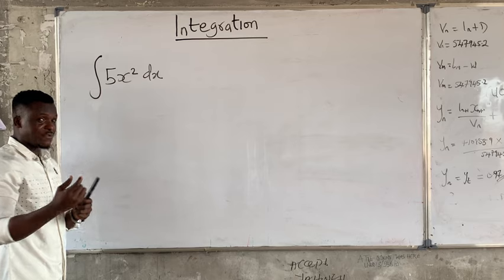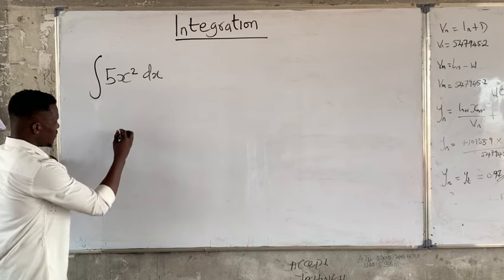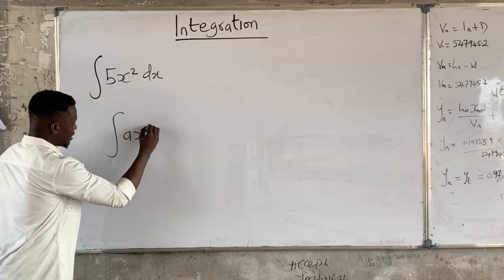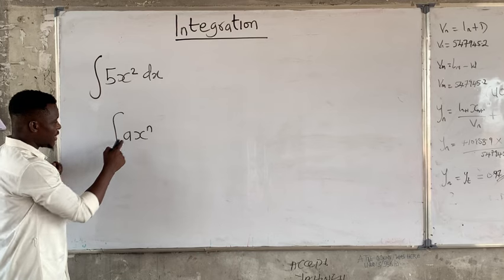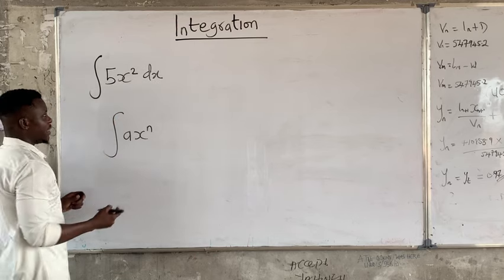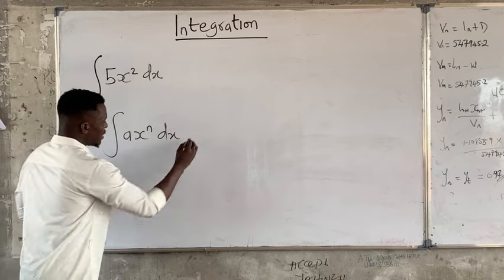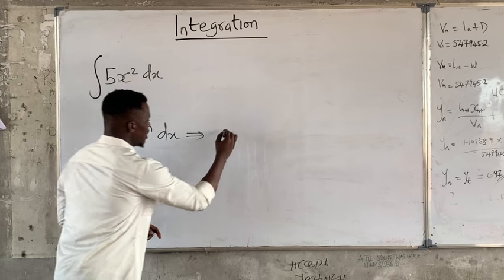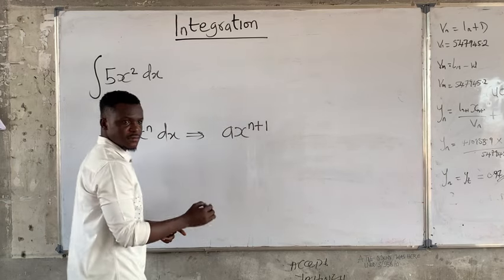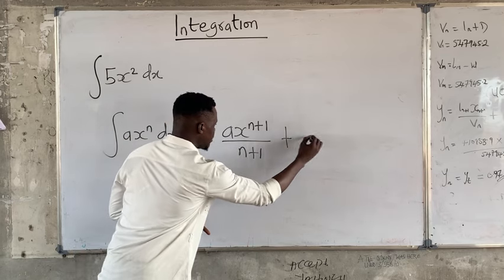Now before you proceed, it is important for you to know that integration has a formula. So the formula is, if your integral of ax to the n, where this a is a constant and this x is a variable, this n is a power of the x. Now this is equal to ax to the n plus 1 over n plus 1 plus your constant.